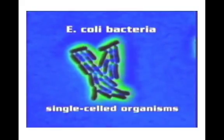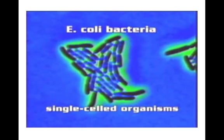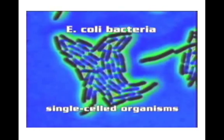Prokaryotic cells are tiny — about a hundred lined up in a row would be about the thickness of a page. But they are highly successful organisms because they can reproduce very quickly, adapt, and survive when their environment changes.